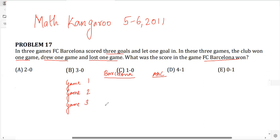Now, what are they saying? That they scored a total of three goals and they let one goal in. So that means the other team scored one goal and in these three games, the club won one game, drew another game and lost one game.